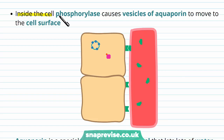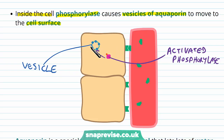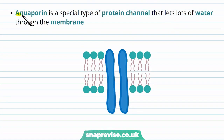Inside the cell, the activated phosphorylase causes vesicles — membrane-bound vesicles containing a channel called aquaporin — to move to the apical side of the cell. These vesicles fuse with the membrane, placing aquaporin channels into the membrane that faces the tubular fluid, rather than releasing a substance. The aquaporin itself is a special type of protein channel which lets a lot of water move through the membrane.